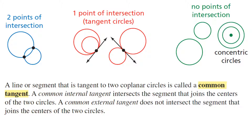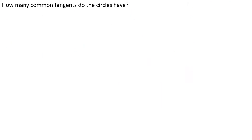Now if we have a line or line segment that's actually tangent to two circles, and they share a tangent, it's called a common tangent. For the verbiage on internal tangent versus external tangent — if I just read it, it kind of goes in one eye and out the other. I find it better when I have an actual example I can look at. So let's figure out how many tangents these circles have, then we'll make it more clear what an internal tangent is versus an external tangent.